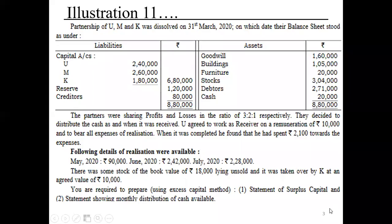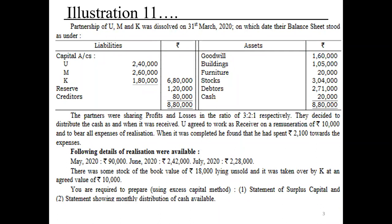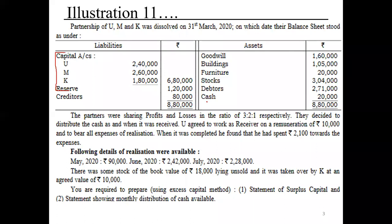The problem states that the partnership of U, M, and K was dissolved on 31st March 2020, on which date their balance sheet stood as follows. On the liability side we have capital balances of U, M, and K, a general reserve, and creditors. Creditors is an external liability while partners' capital and general reserve are capital liabilities.